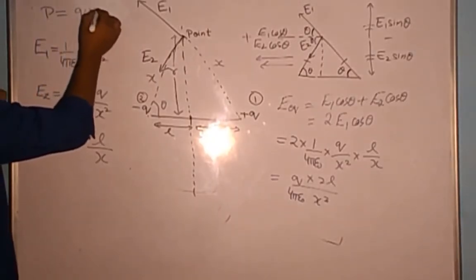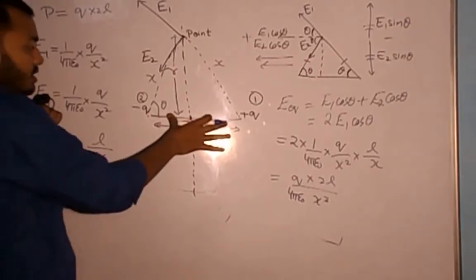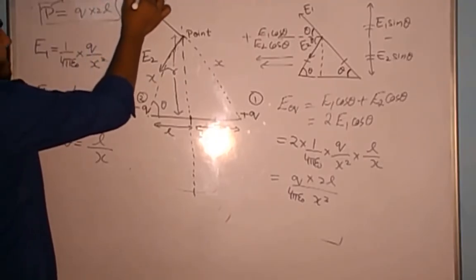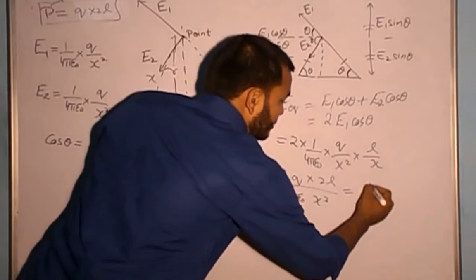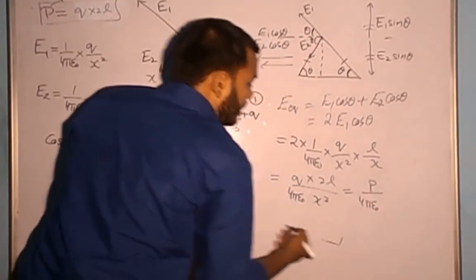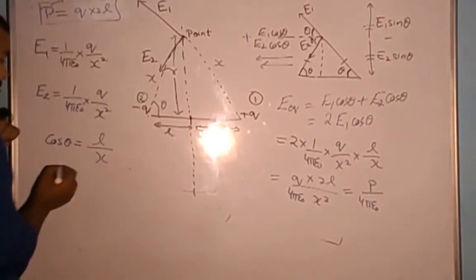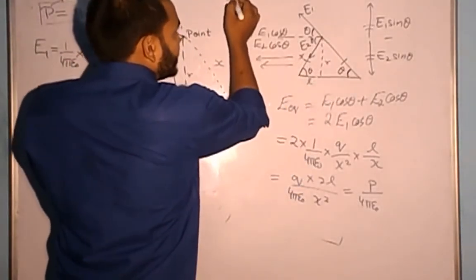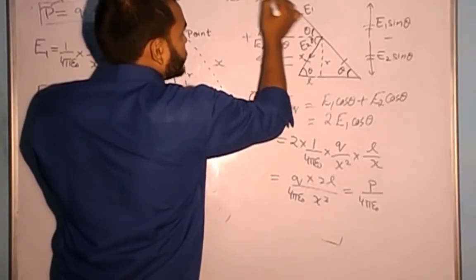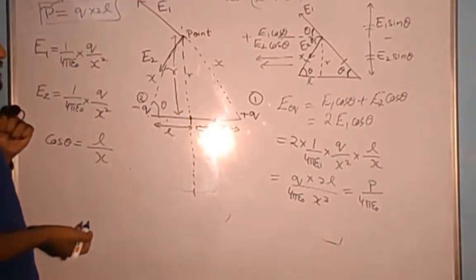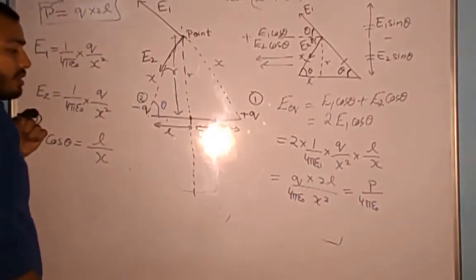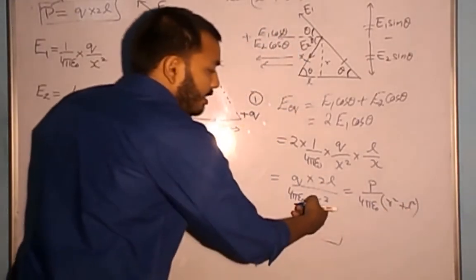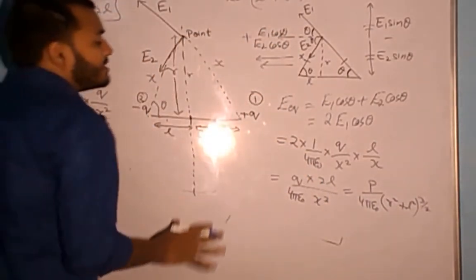I rearrange to q × 2L because there is a quantity called dipole moment: p = q × 2L, where 2L is the distance between the two charges. So the expression becomes p / (4πε₀ × x³). Now, from the right triangle, x² = L² + R², so x = (L² + R²)^(1/2), and therefore x³ = (R² + L²)^(3/2).